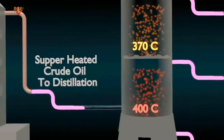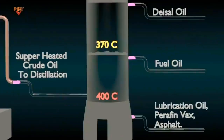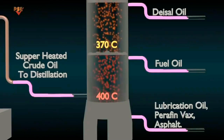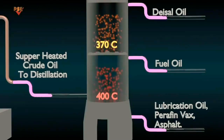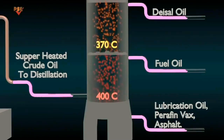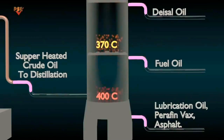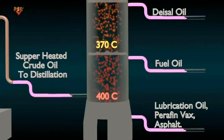The feed section is the hottest point in the distillation tower and can reach as high as 400 degrees C. Components that are still liquid at this elevated temperature become the tower's bottom product.